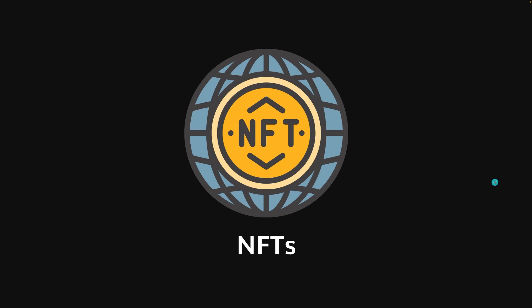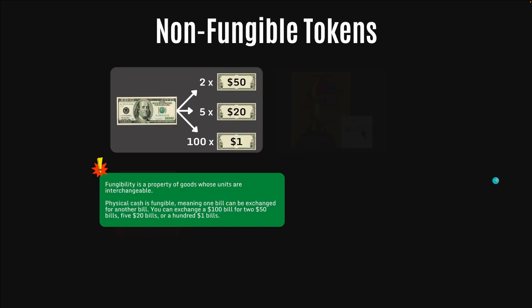Next, we have NFTs. What are NFTs? NFT stands for non-fungible token. We have to talk about fungibility in order to understand what non-fungible means. Fungibility is a property of goods whose units are interchangeable. Cash is a good example — $100 is worth the same as two $50s or five $20 bills or one hundred $1 bills. Each of these are interchangeable, which means they are fungible.